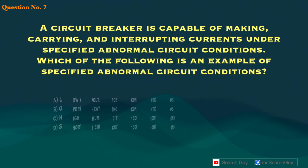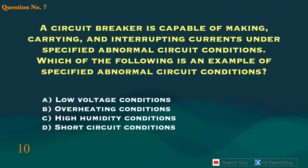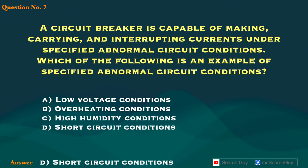Question 7. A circuit breaker is capable of making, carrying, and interrupting currents under specified abnormal circuit conditions. Which of the following is an example of specified abnormal circuit conditions? A. Low voltage conditions. B. Overheating conditions. C. High humidity conditions. D. Short circuit conditions. Answer: D. Short circuit conditions.